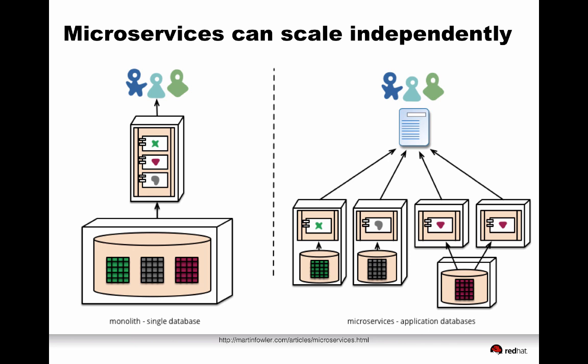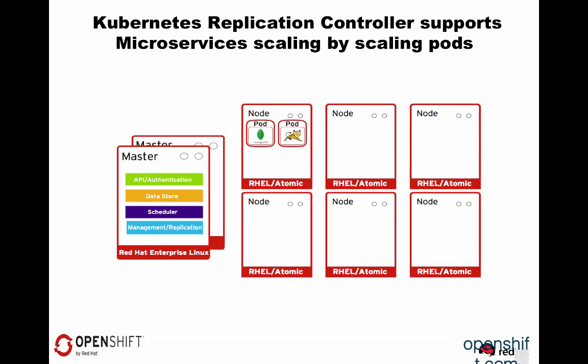Another feature of microservices is that they can scale independently. Consider this application — there are two instances of the application running as multiple pods, they have scaled independently, and they are talking to a shared database. OpenShift allows you to scale your pods up and down; the specific pods you desire to scale you can scale independently as needed. You could be using manual scaling or automatic scaling — both are possible. As you scale, the scheduler places and distributes the pods across the cluster.